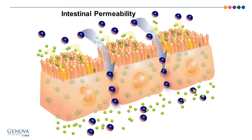With intestinal permeability, the mucosa is compromised, allowing a pathological increase in permeability. This allows for increased absorption into the bloodstream of antigens, inflammatory mediators, and other macromolecules.